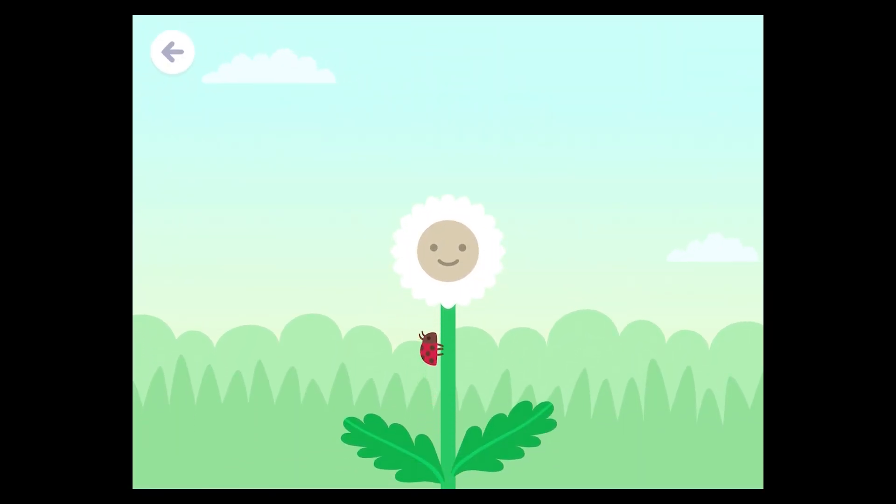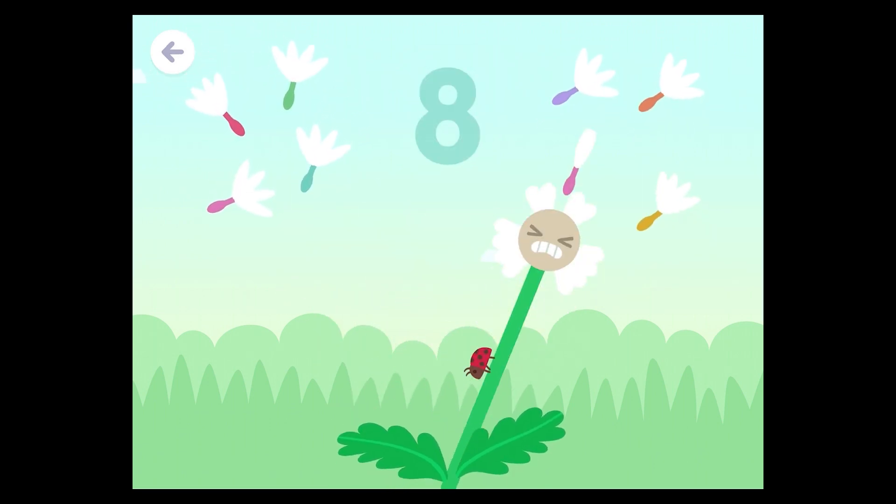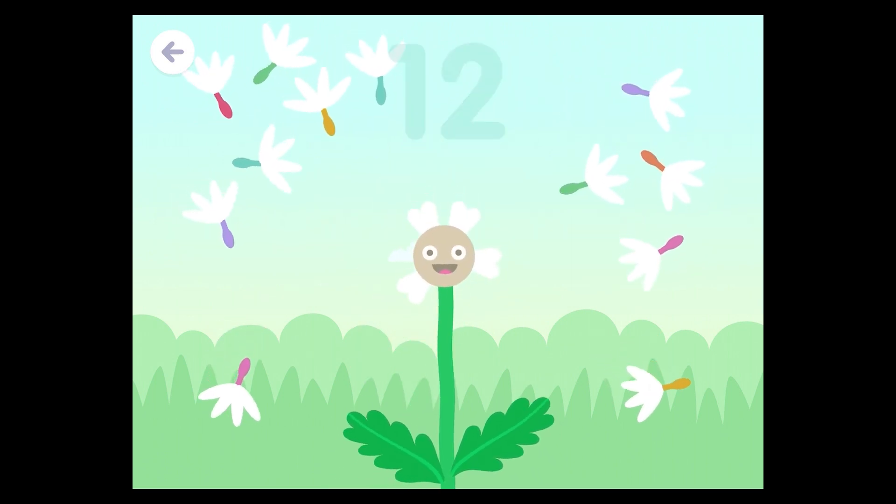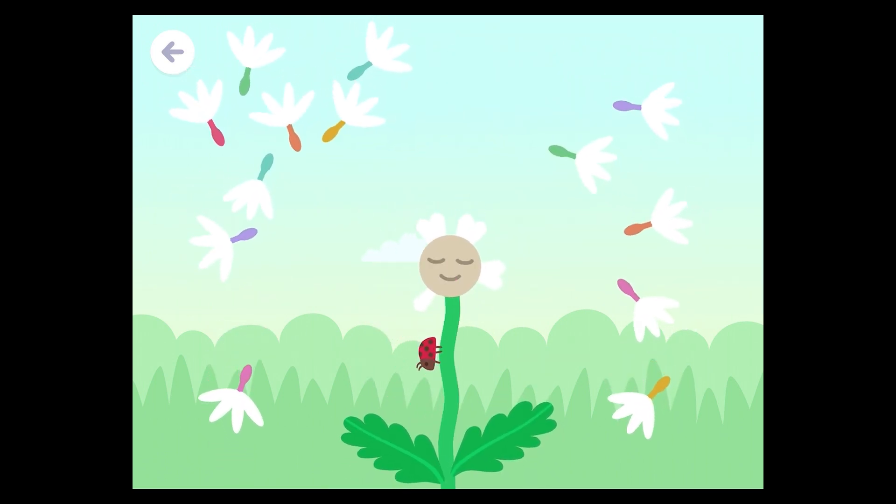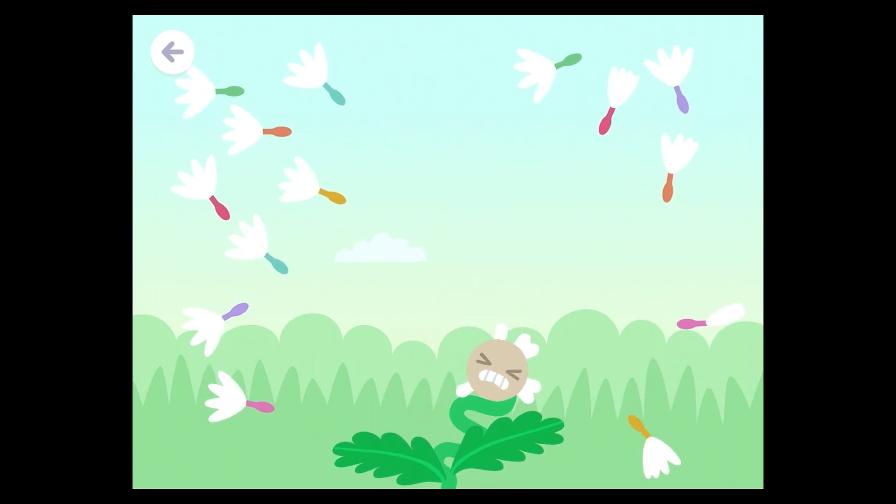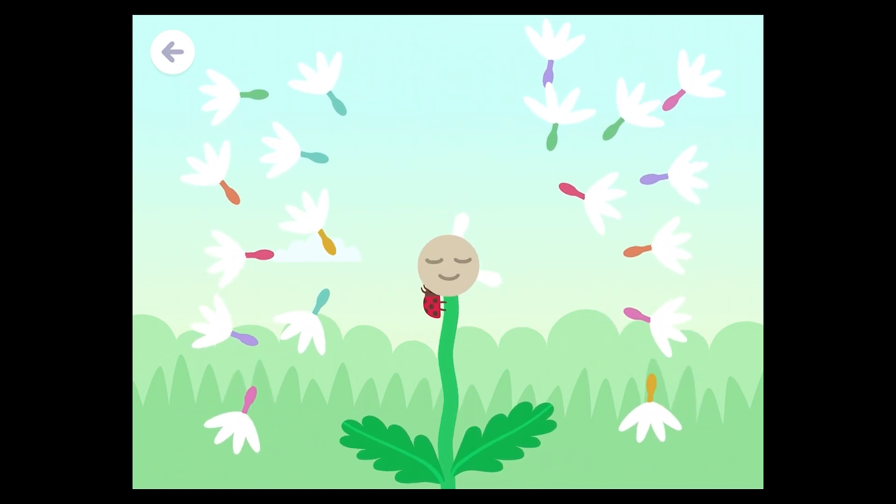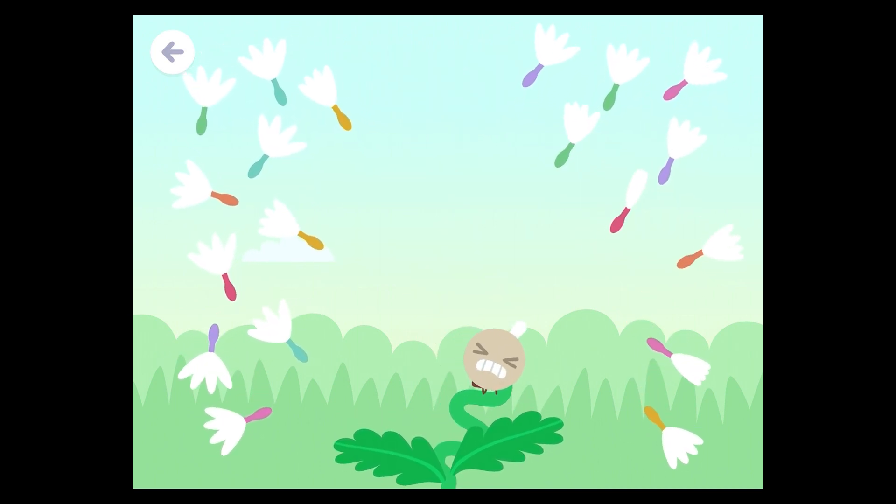Two strawberries. 1, 2, 3, 4, 5, 6, 7, 8, 9, 10, 11, 12, 13, 14, 15, 16, 17, 18, 19, 20 seeds.